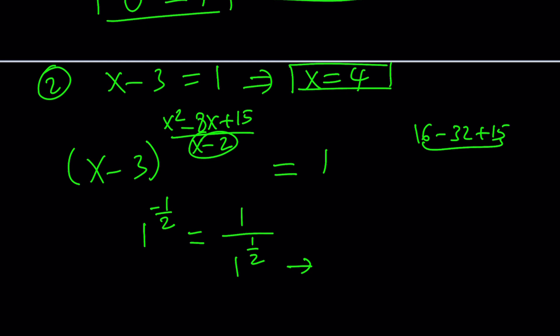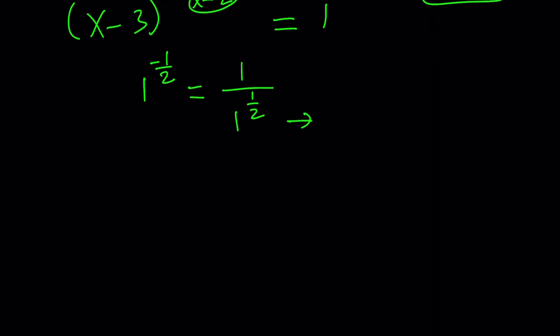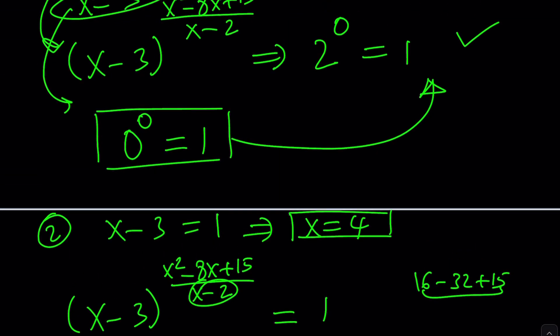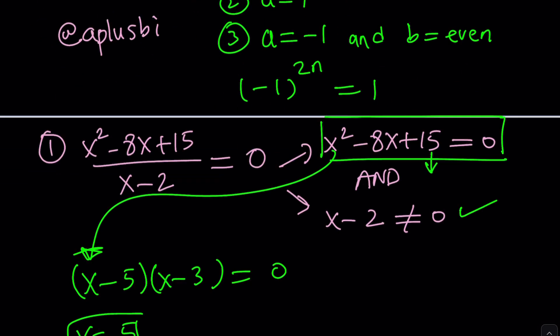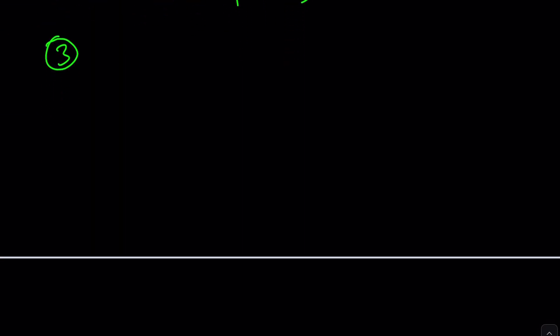Now, we're going to look at the third case. And then maybe we can also think a little bit about complex number cases, if possible. I don't even know. So we have the following equation again, (x-3) to the power (x²-8x+15)/(x-2) equals 1. What is the third case?